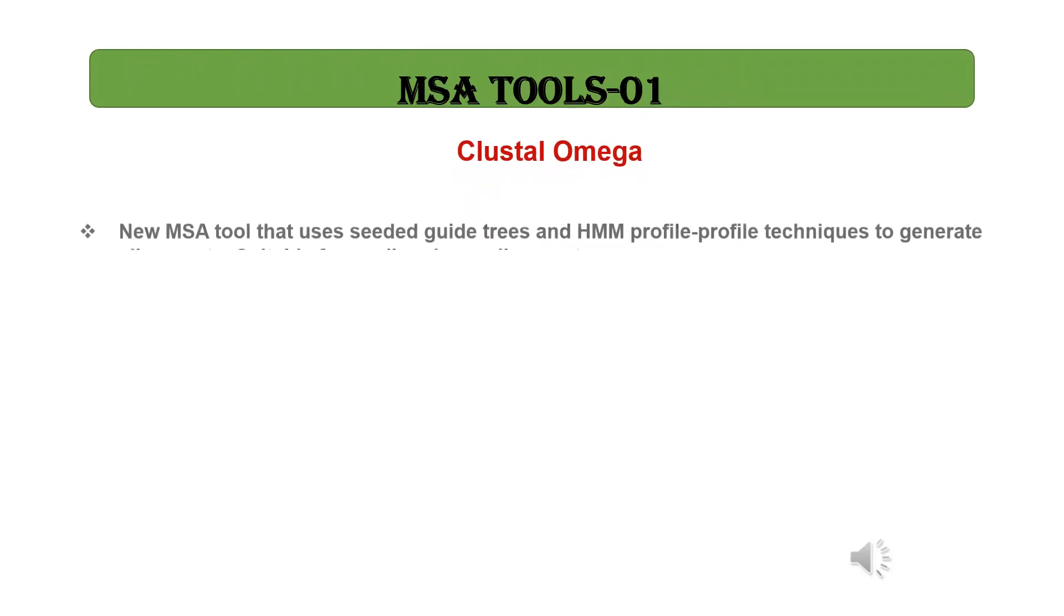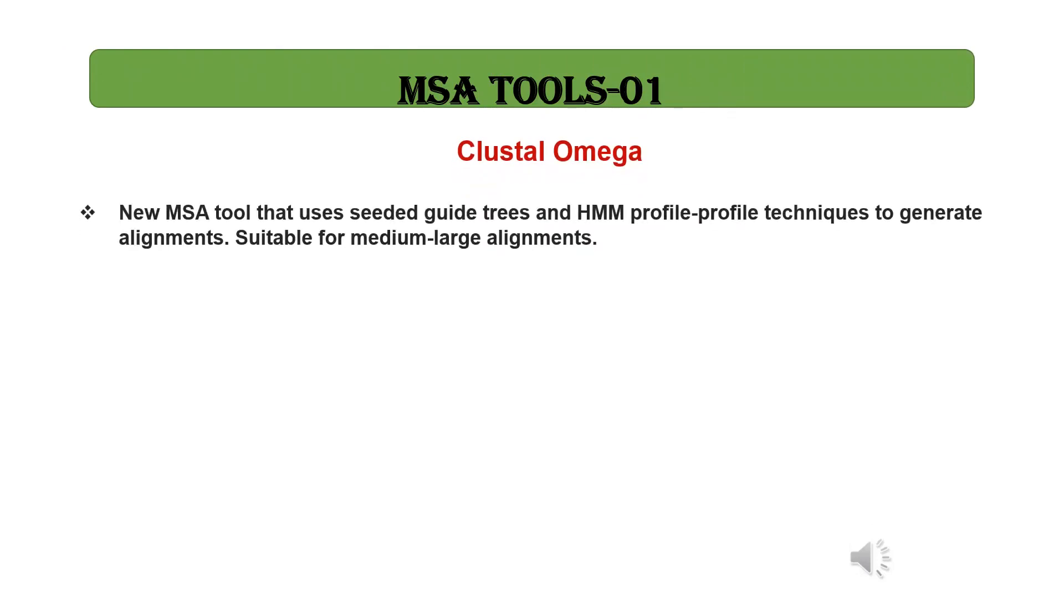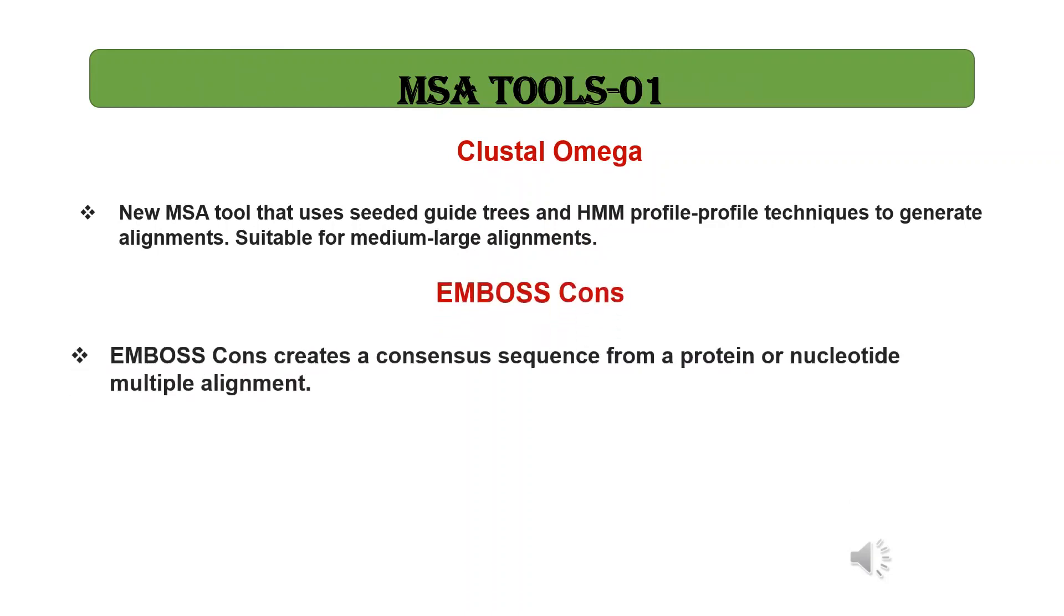Let us search different tools available for multiple sequence alignment. 1. Clustal Omega. New MSA tool that uses seated guide trees and HMM Profile Profile techniques to generate alignments. Suitable for medium-large alignments. 2. Emboss Cons. Emboss Cons creates a consensus sequence from a protein or nucleotide multiple alignment. 3. Caline. Very fast MSA tool that concentrates on local regions. Suitable for large alignments.